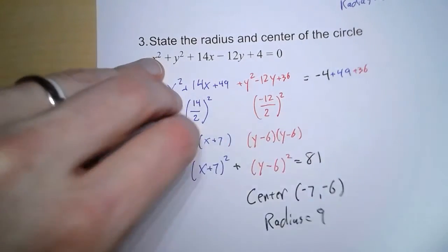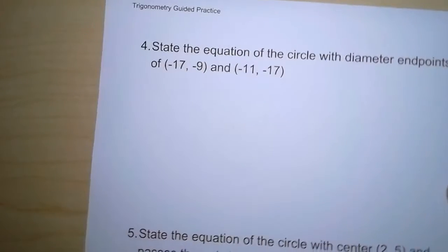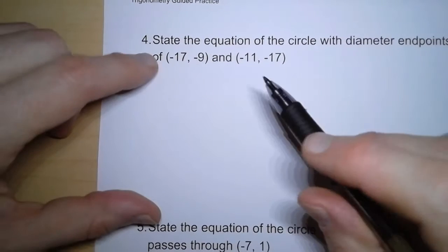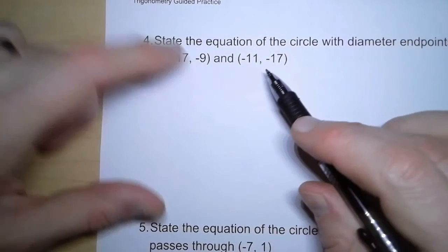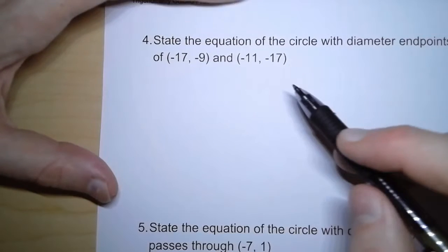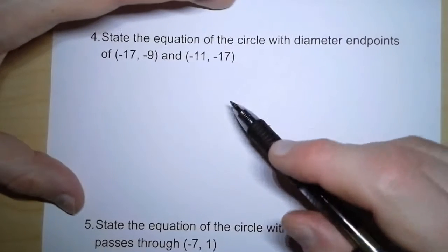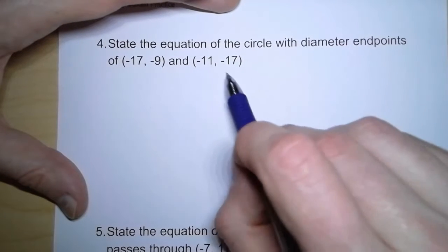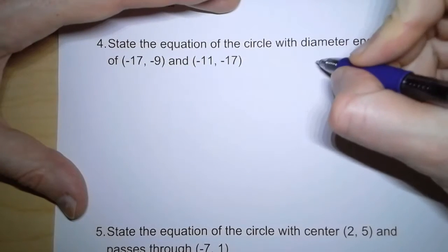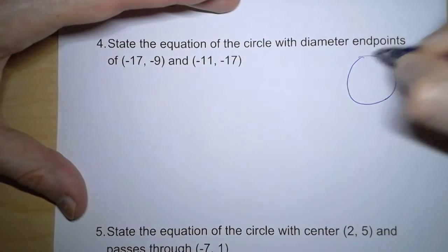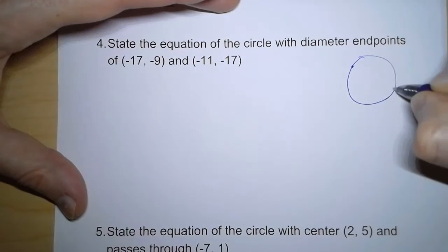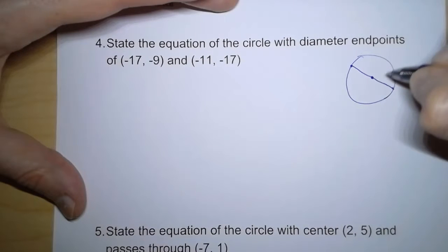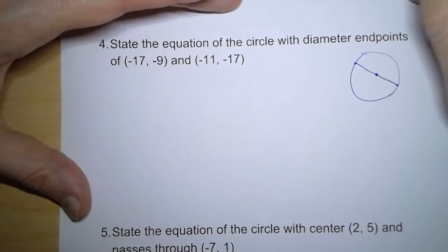Now onto the flip side. Now we're given some different information. Now we're given that the diameter has endpoints at negative 17, 9, negative 9, and negative 11, negative 17. We're not even given an equation now. Now how do we do this? Well, the center is going to be in between. Because if you think about it, what is a diameter? The diameter of a circle is a line segment running through the circle, but it passes through the center. And the center has to be at the midpoint.